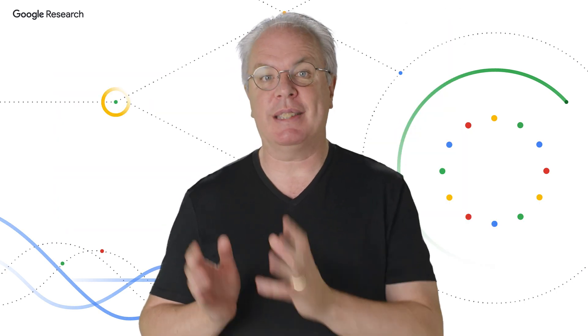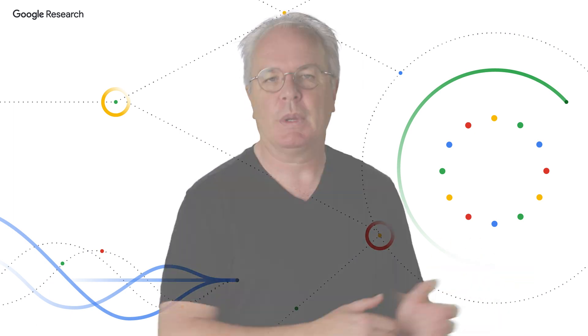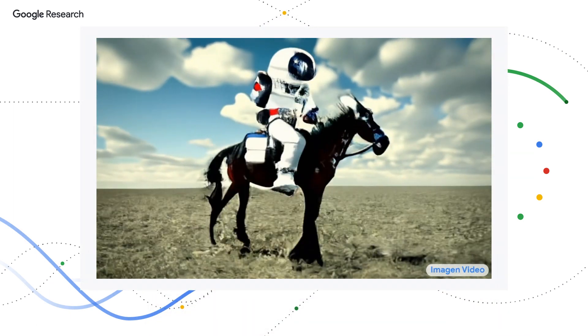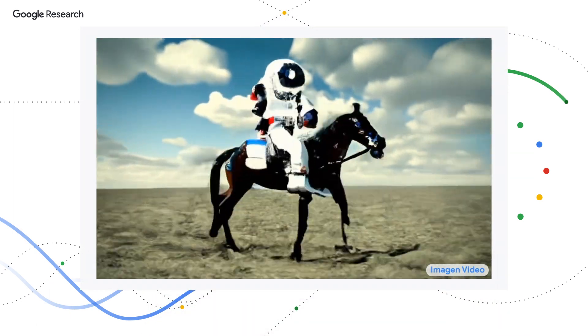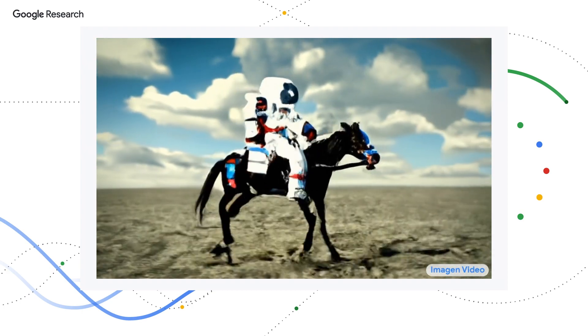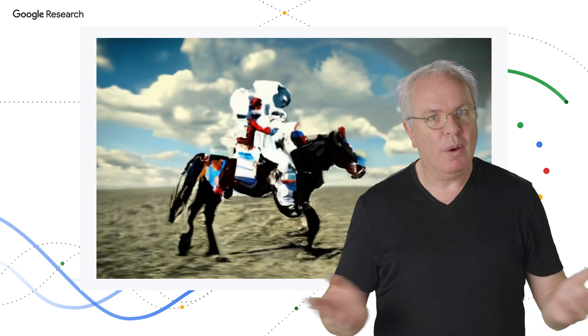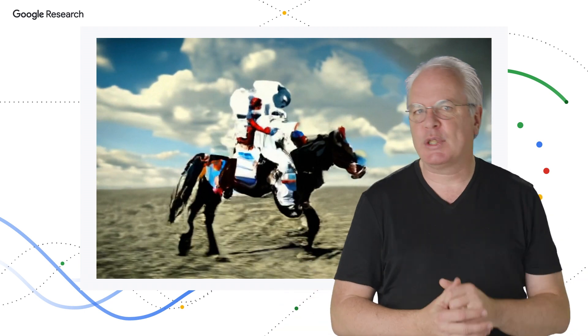These models are where you can give a text prompt and have a model generate video to match that prompt. So for example, consider this short video that was generated from a piece of text. It was generated entirely from a text saying, an astronaut riding a horse. But how? That's the question.